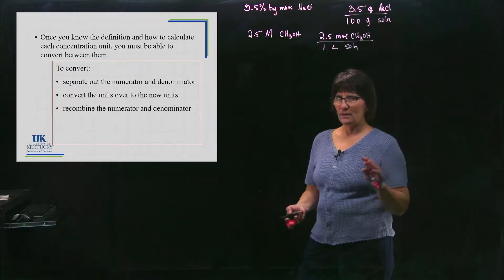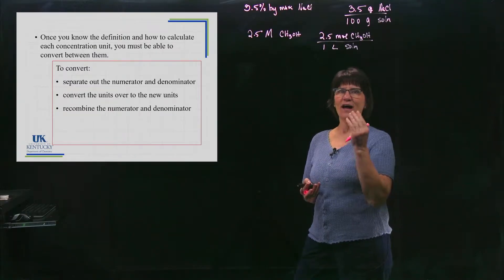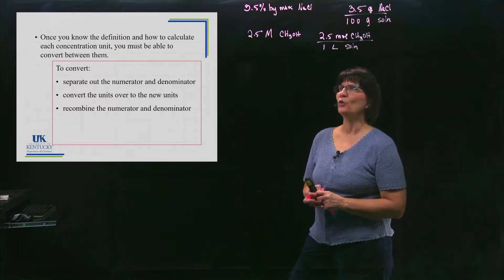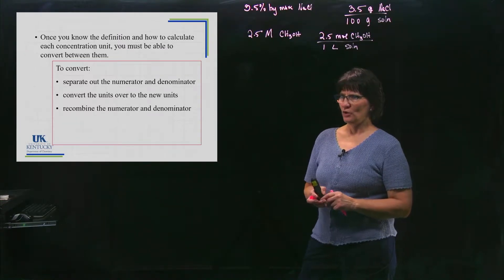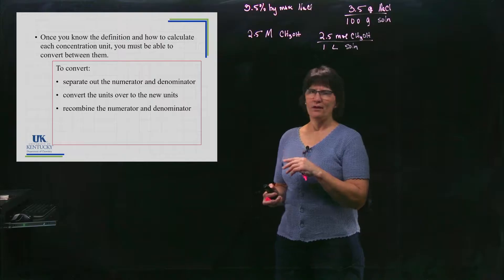You're going to recombine that numerator and denominator and divide them into each other to get a single number, single value for your new concentration unit.